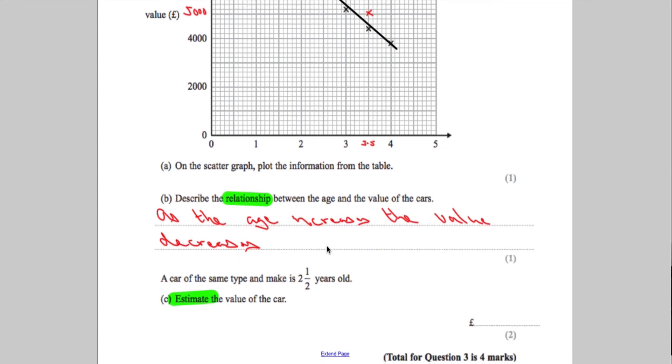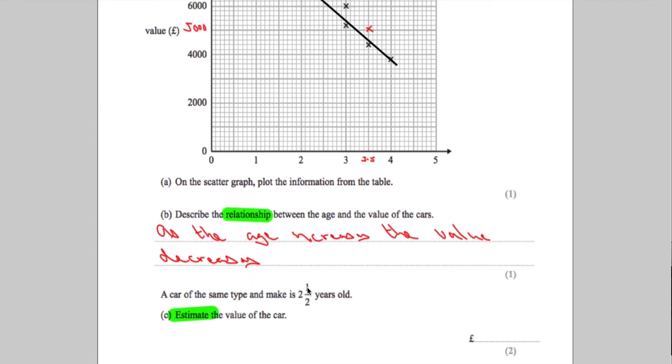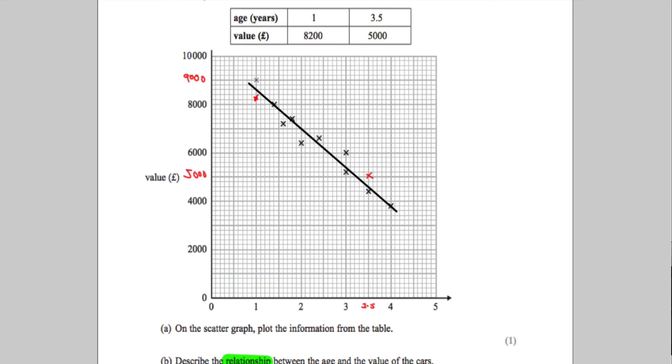Now we need to make an estimate from 2.5 years old. We're going to go to 2.5, read up, and then read across.